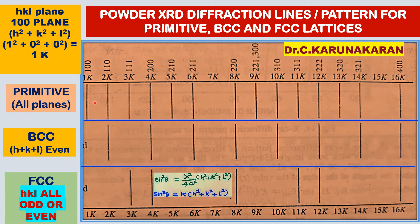In powder XRD, each line in the pattern corresponds to a particular plane. Each line can be labeled using the sinθ or theta value — the angle of incidence. From the angle of incidence, the plane can be identified and labeled using the equation sin²θ = K(h² + k² + l²).